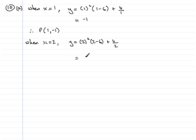So working this out, what do we get? We get 2 take away 6 is minus 4 times 4 here, that's minus 16. And 4 divided by 2 is 2, so minus 16 plus 2 is minus 14. So therefore, Q is the point 2, negative 14.